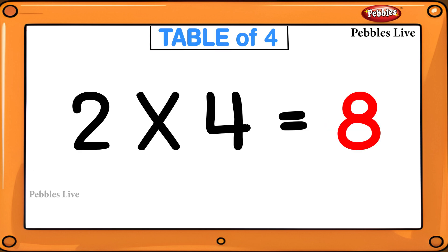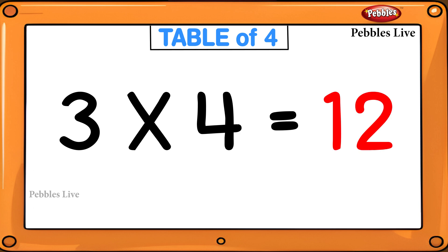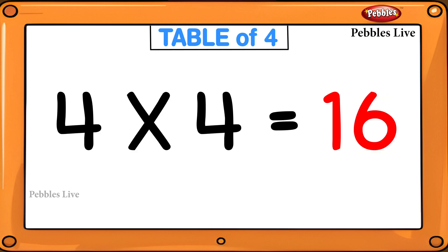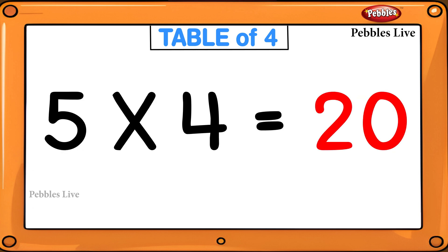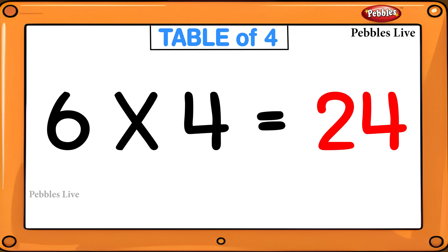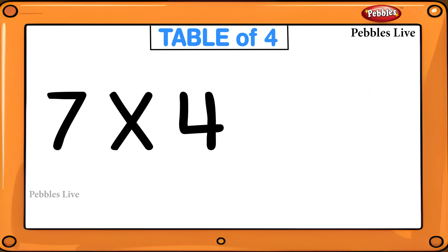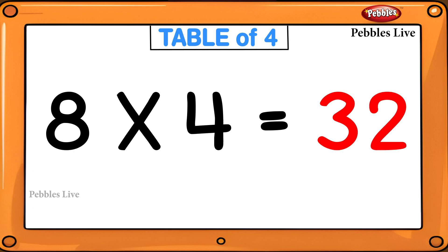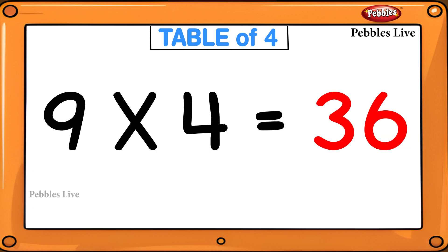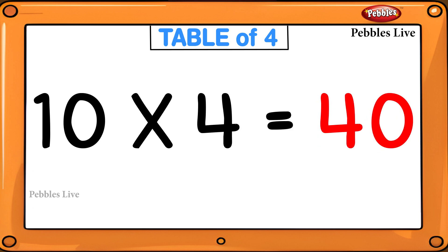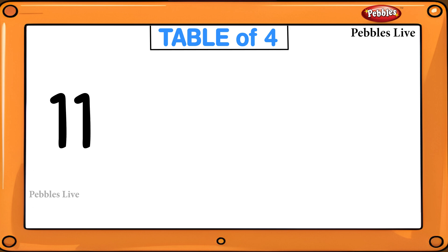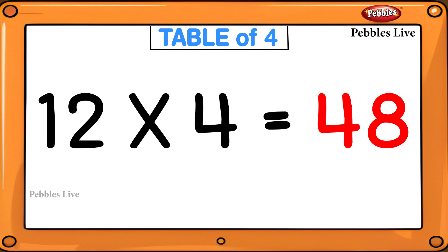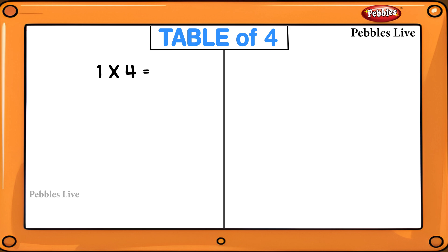2 fours are 8, 3 fours are 12, 4 fours are 16, 5 fours are 20, 6 fours are 24, 7 fours are 28, 8 fours are 32, 9 fours are 36, 10 fours are 40, 11 fours are 44, 12 fours are 48. 1 four is 4.